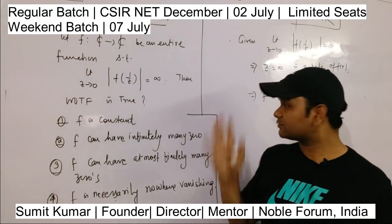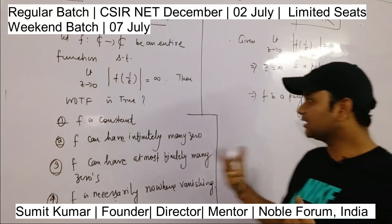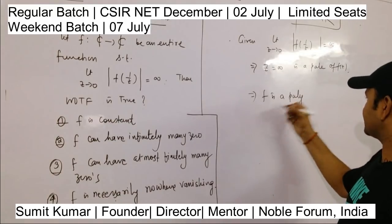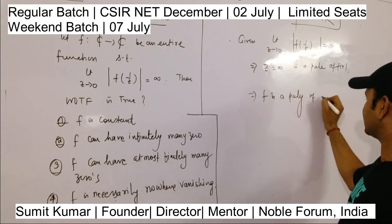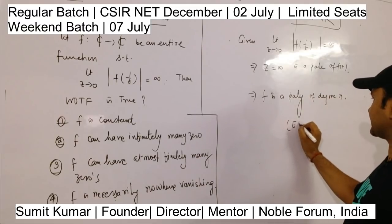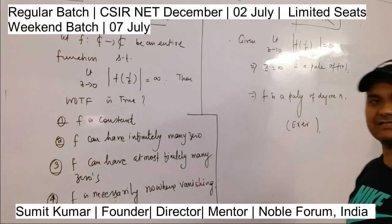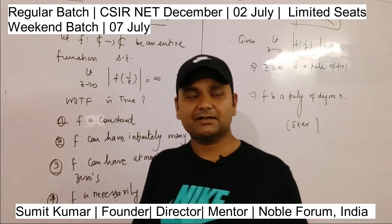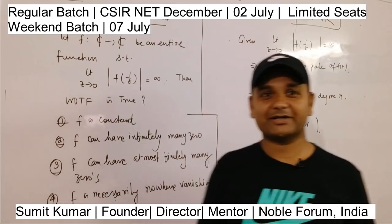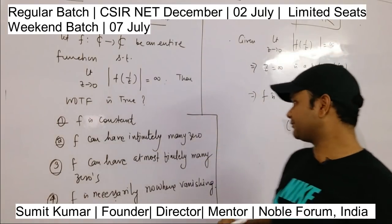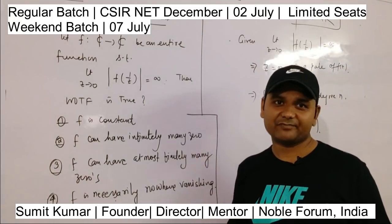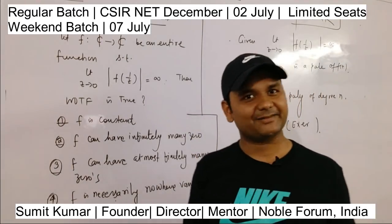So f is a polynomial of some degree n. This is a small exercise — please prove it yourself; it will help you a lot, especially in PhD interviews. Now, a polynomial of degree n has finitely many zeros.